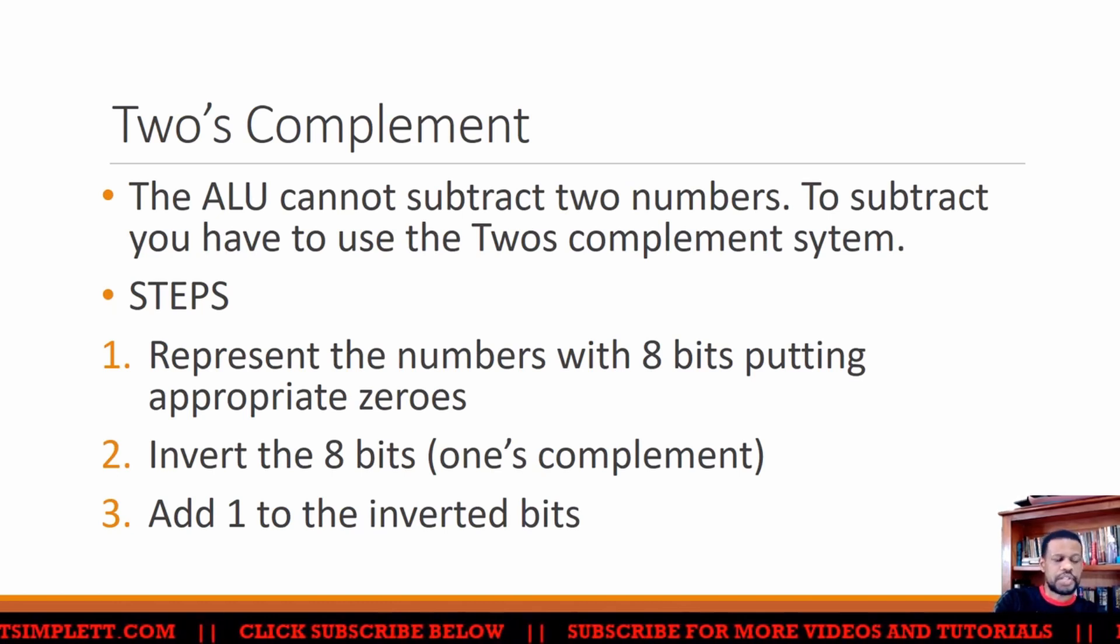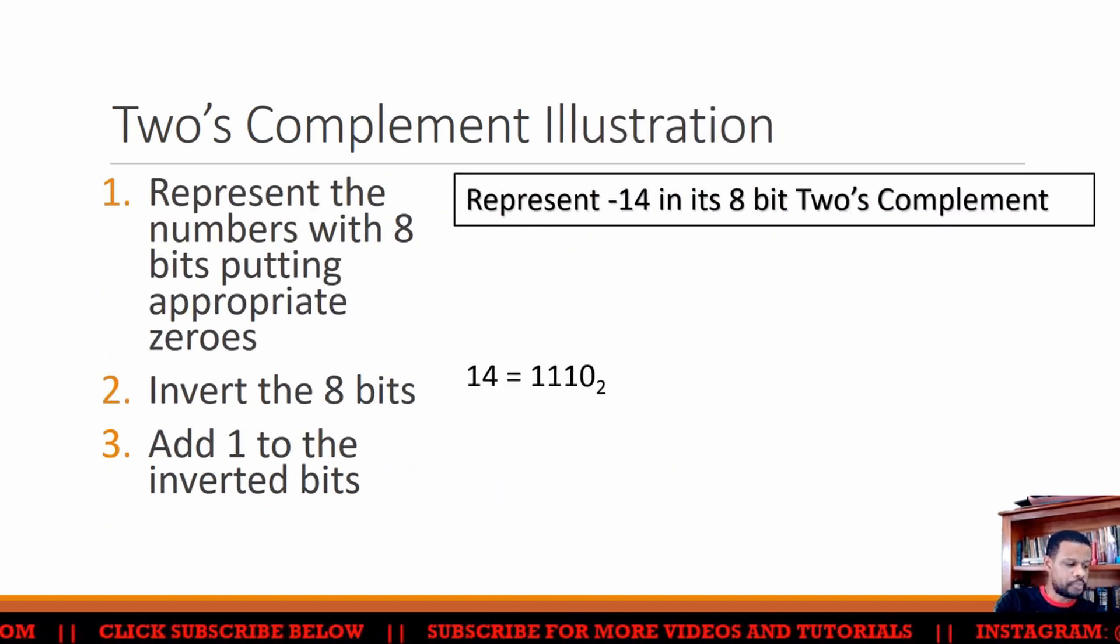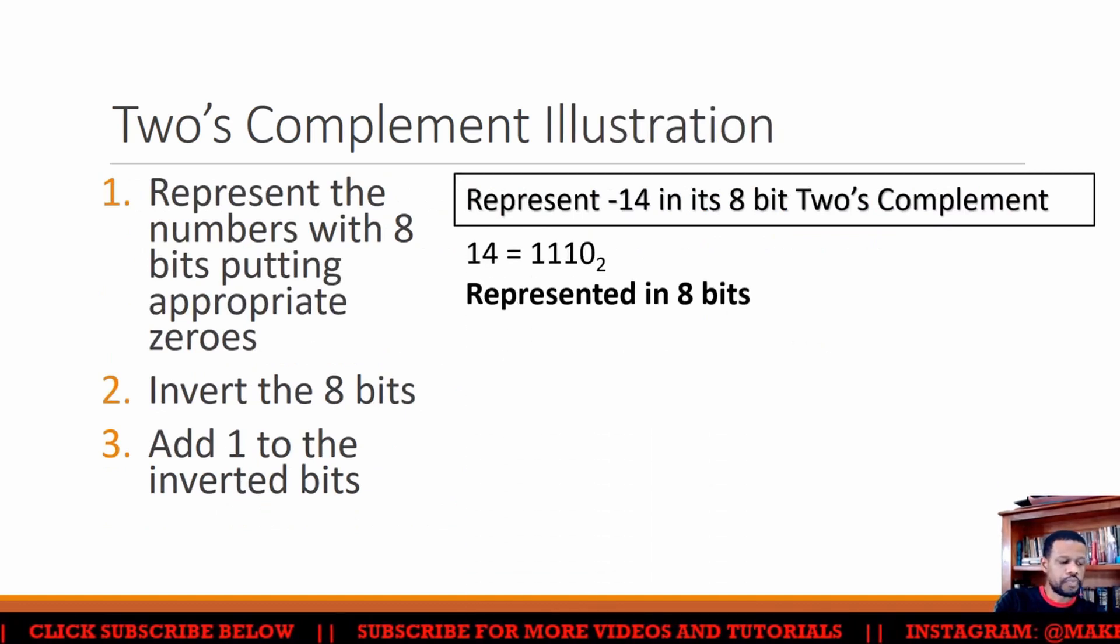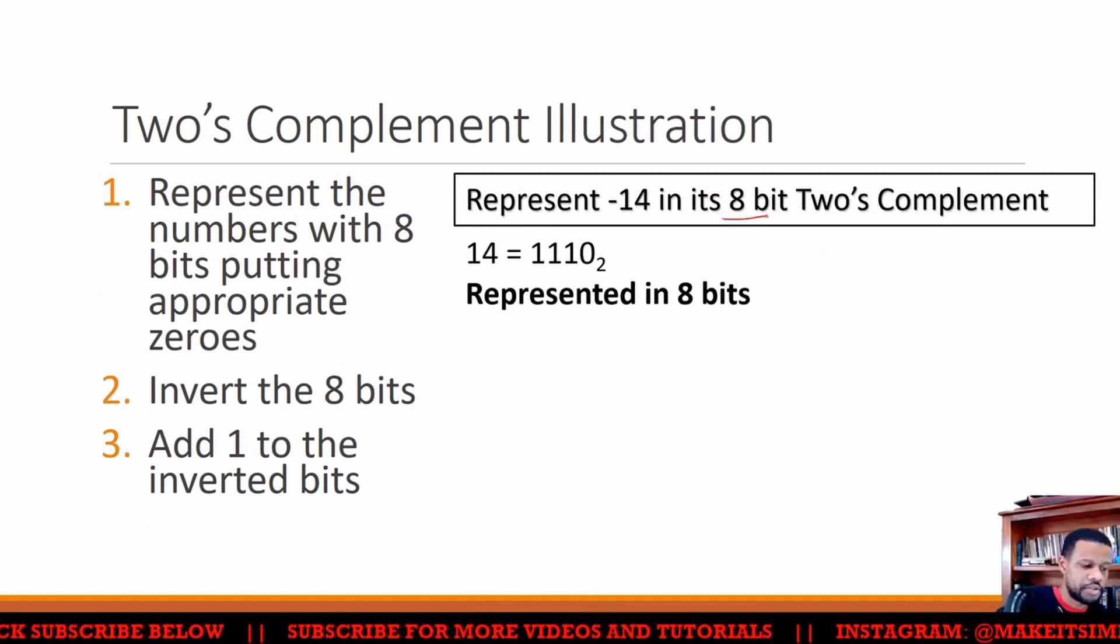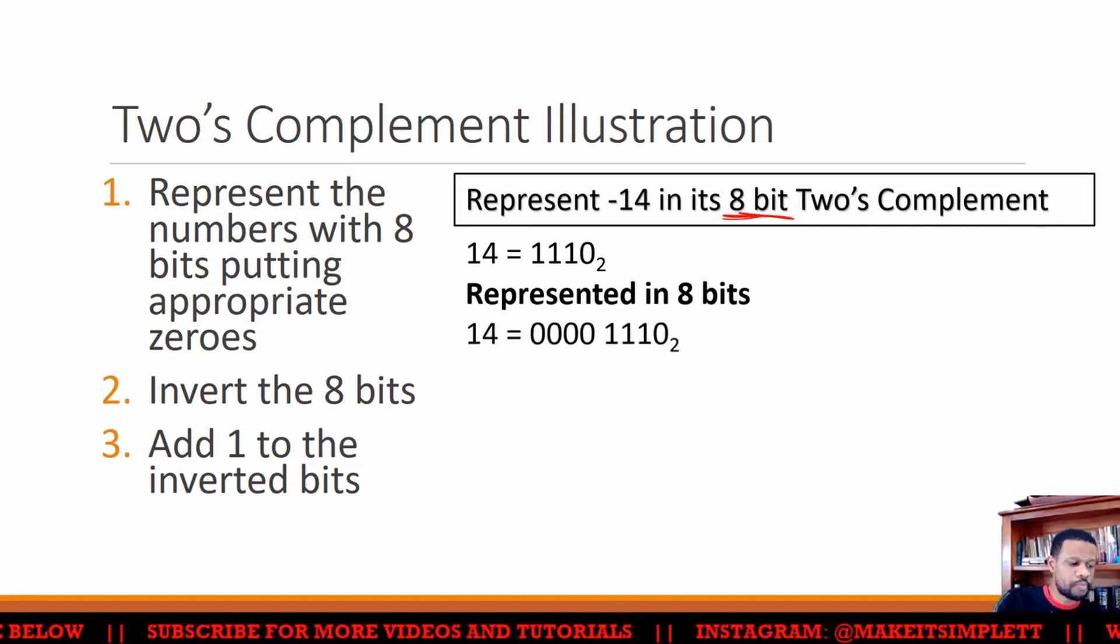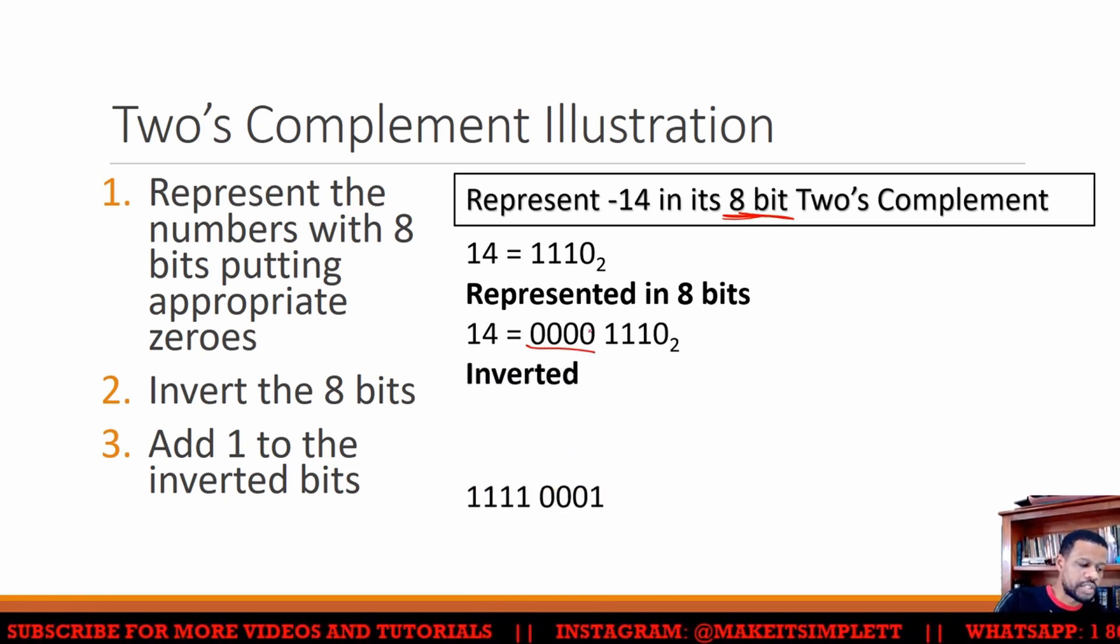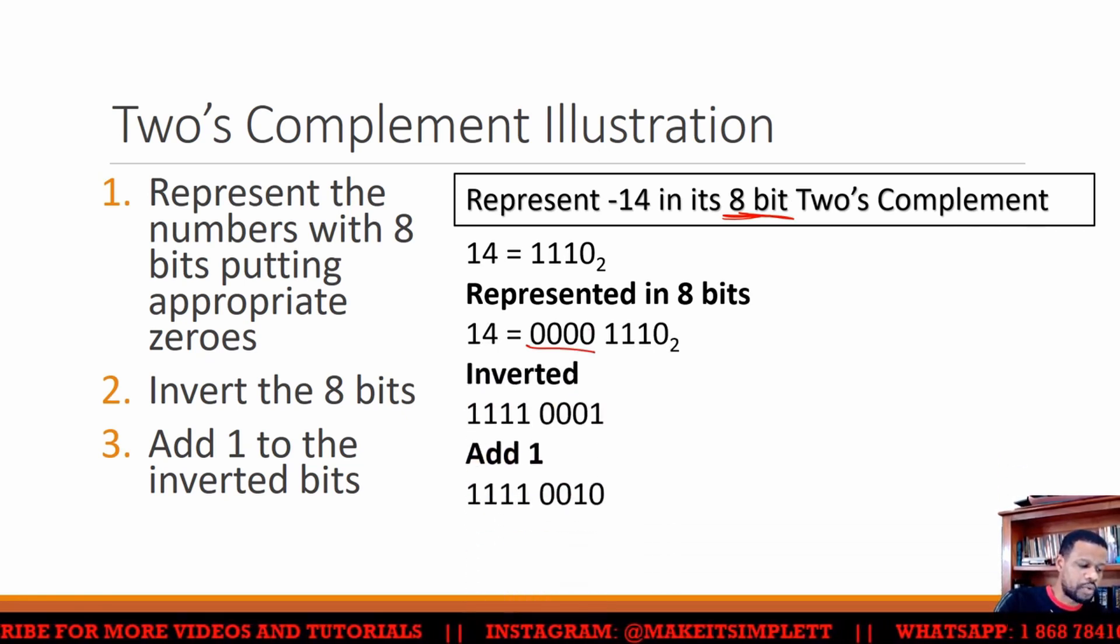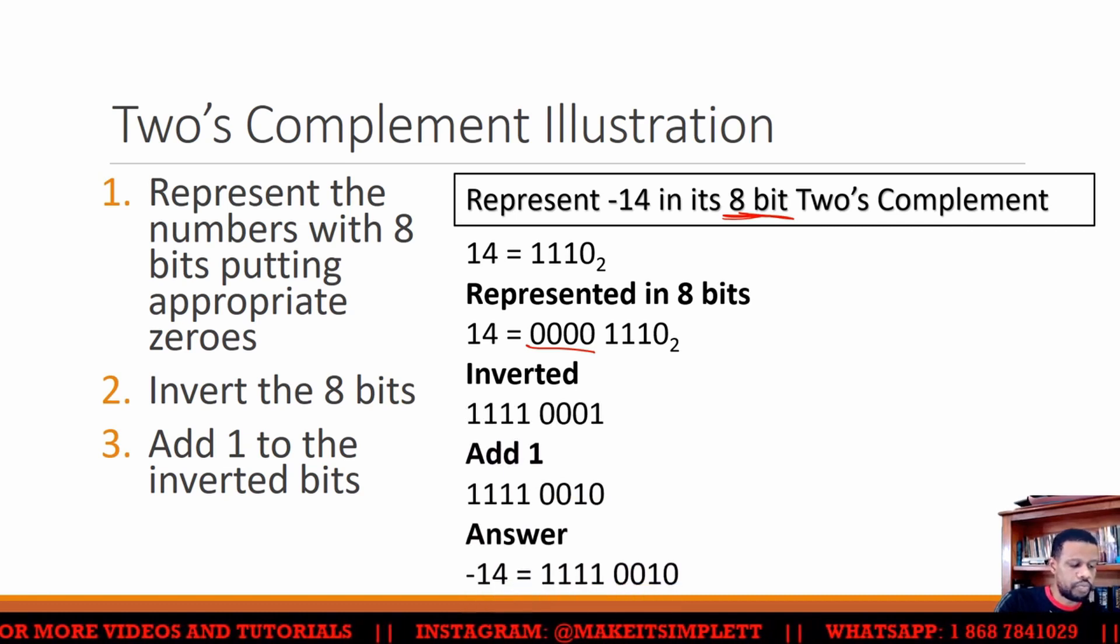Two's complement now is the way that computers actually do subtraction. The steps are: you get the number, you pad to the amount of bits that they say to use. They might say eight bit two's complement, 12 bit two's complement. Fill it up with the required bits, and then you invert it. When you invert them, you add one, and boom, you get the answer.